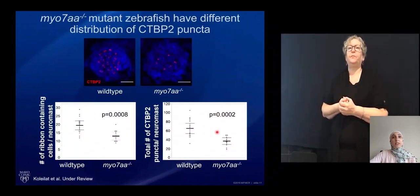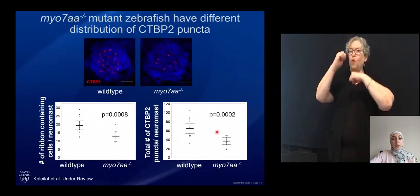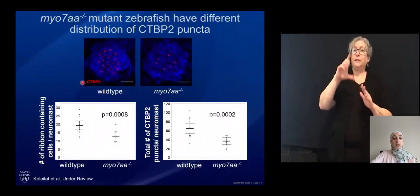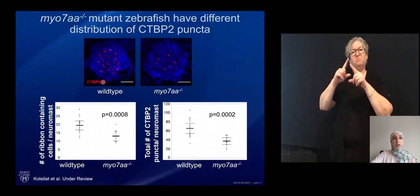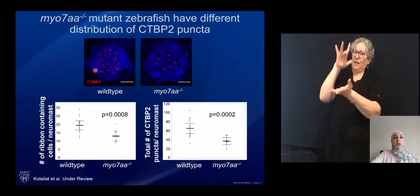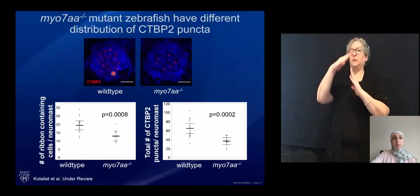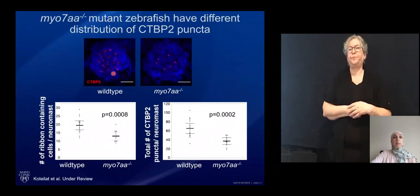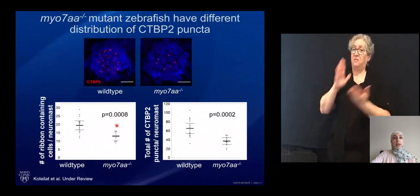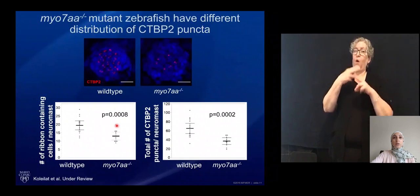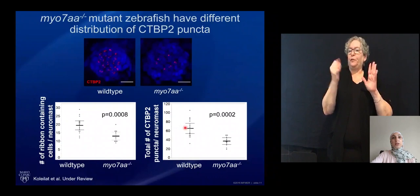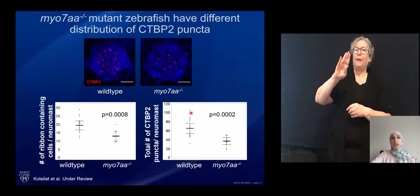We also looked at the ribbon synapse structure using another technique that actually labels the protein. In this case, we labeled CTBP2 — again the gene alternatively spliced to produce ribeye, the central component of the synaptic ribbon shown here in red. We identified that the myo-7a mutants have both fewer ribbon-containing cells — defined as a cell with at least one red dot — and also fewer total CTBP2 puncta across each cluster of hair cells.